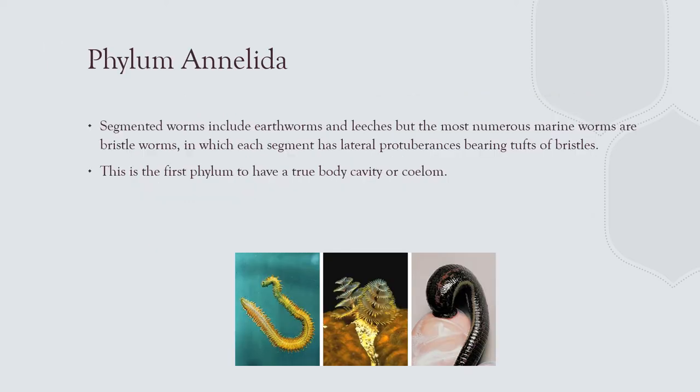Annelids: we see plenty of sandworms and feather duster worms in the marine environment — some filter-feed, some burrow. There's also the freshwater leech, which medieval doctors used to draw blood from people, believing they were removing bad blood. These are segmented worms.